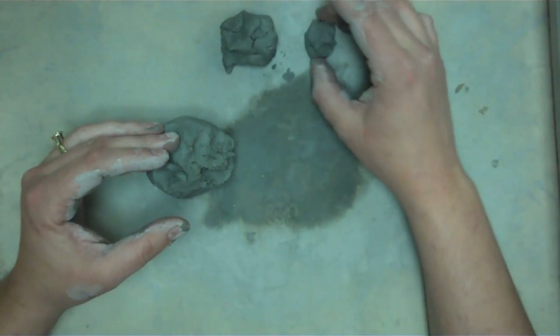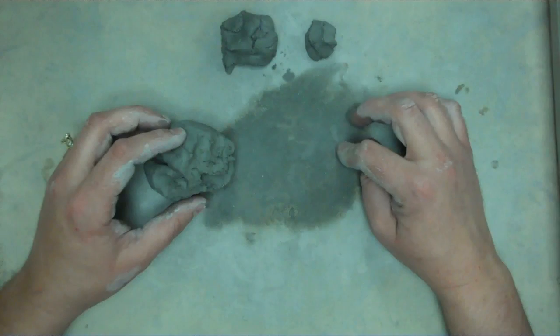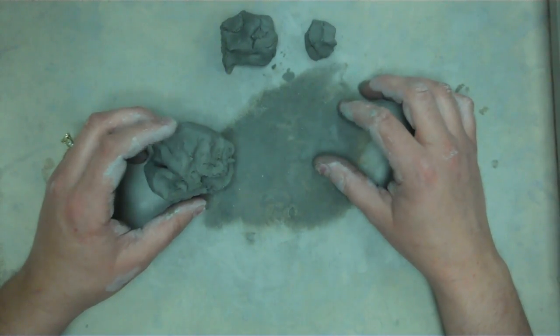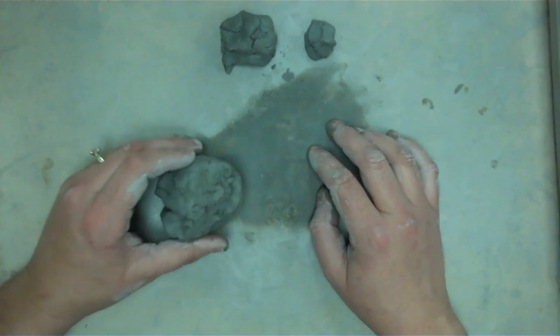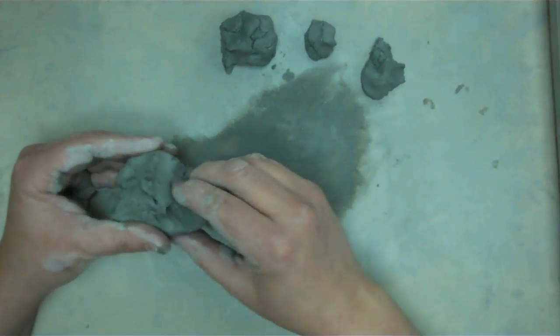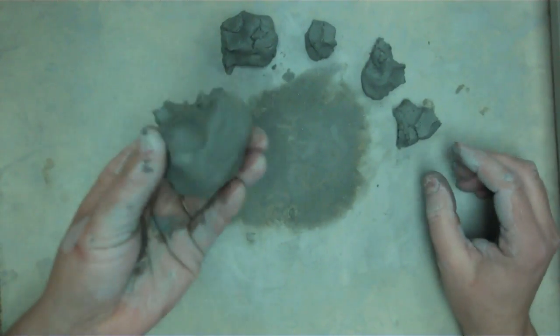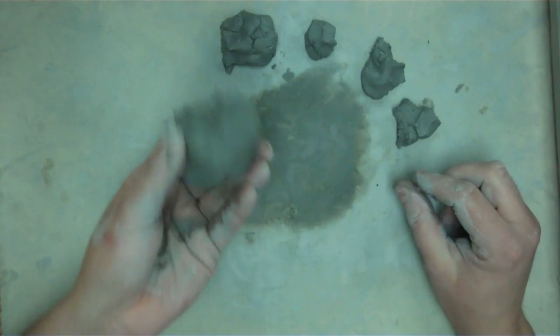So here would be the tongue, this would be the eyes. And if you want to make arms for your monster, then you need to pinch off clay for the arms. So what you have left is going to become your pinch pot.